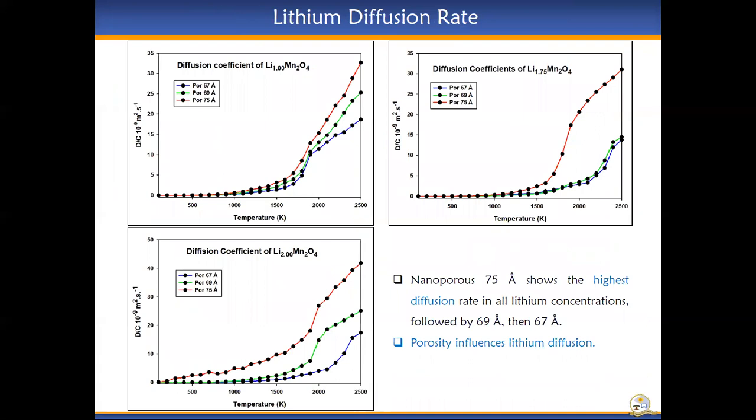The diffusion rate of the structures is observed to be higher for nanoporous 75 followed by 69 then 67 for all concentrations, indicating that porosity of materials influences their diffusion rate.